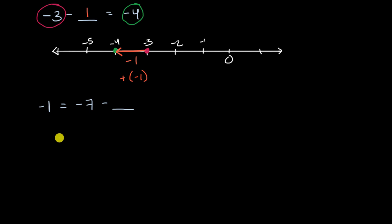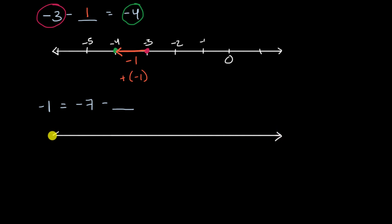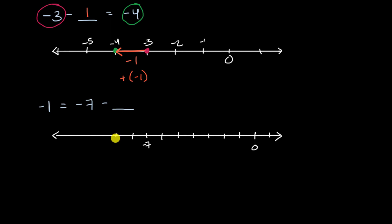Let me draw a number line here. I have a negative one and a negative seven, so I'm gonna deal with the negative end of things. Let me make this zero. I'll make that positive one, negative one, negative two, negative three, negative four, negative five, negative six, negative seven — this is negative seven right over here — negative eight, negative nine, negative ten. I think that's probably enough.